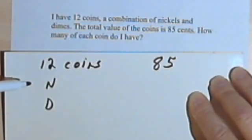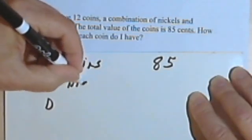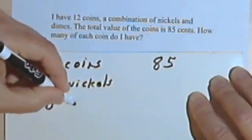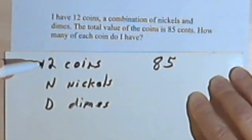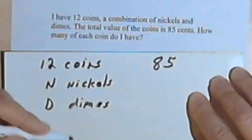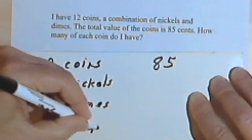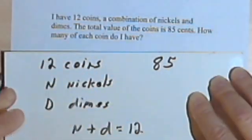And it asks, how many of each coin do I have? So we're going to say that N and D stand for the number of coins. So N is the number of nickels, and D is the number of dimes. And we know that there's a total of 12 coins, so I can make an equation. I know that the number of nickels plus the number of dimes must equal 12. So I can write N plus D equals 12.